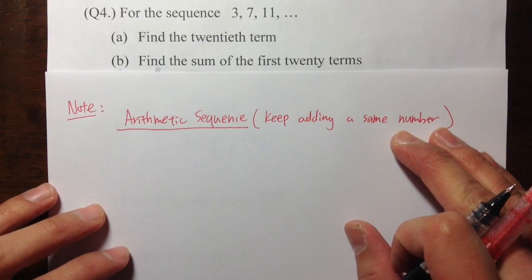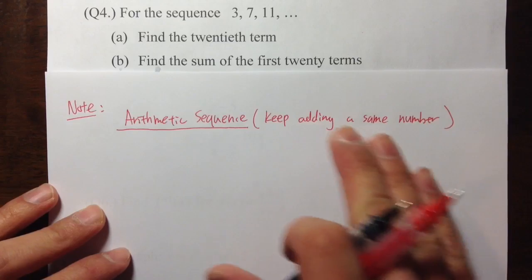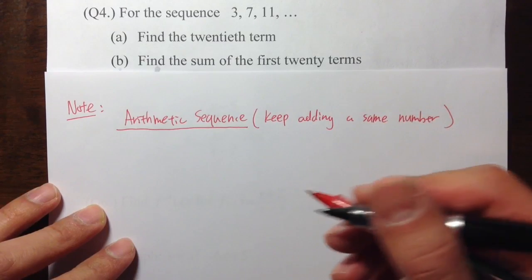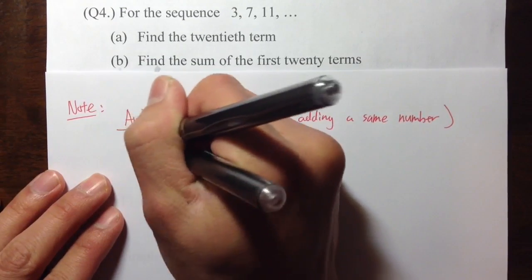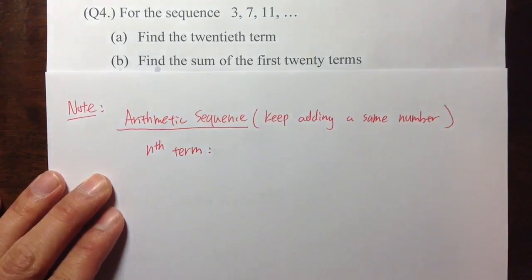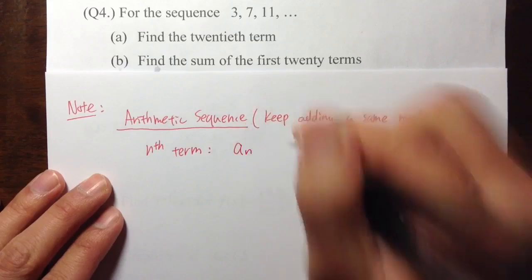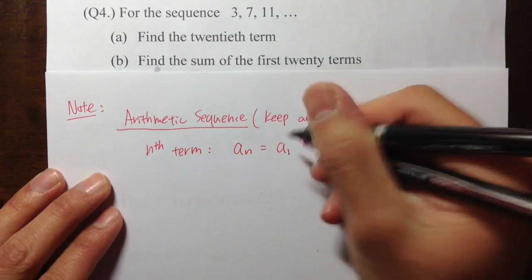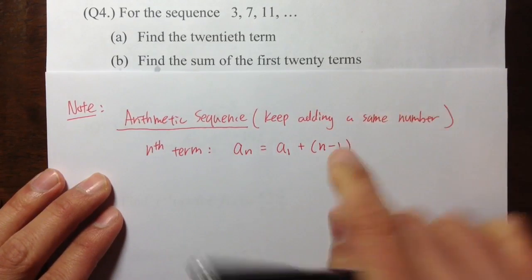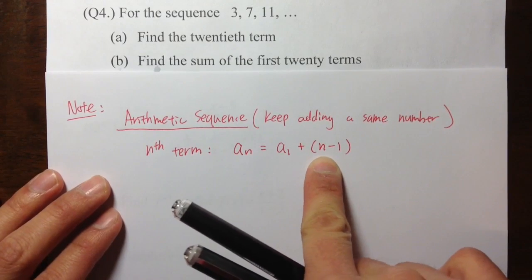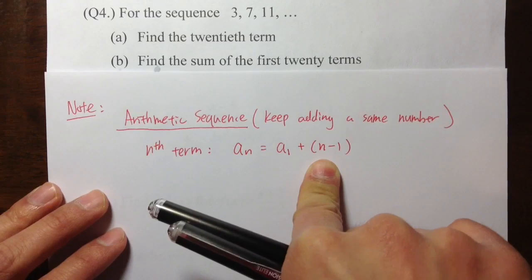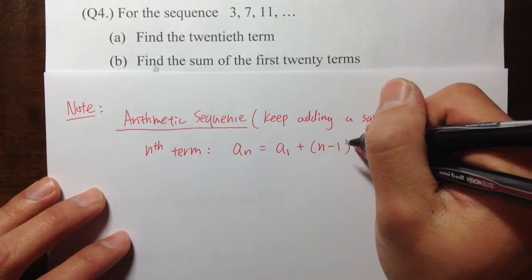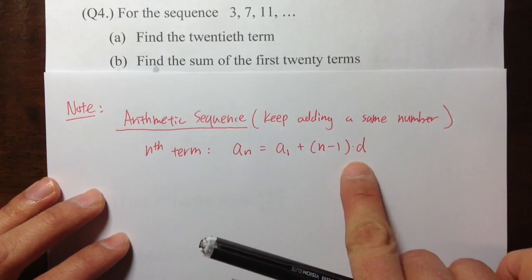That number can be negative, in which case it becomes subtraction — that's why we say keep adding the same number. For an arithmetic sequence, we need to know how to find the nth term. That's given by the formula: a_n equals a_1, the first term, plus parentheses n minus 1, times d — where d is that same number, the common difference.